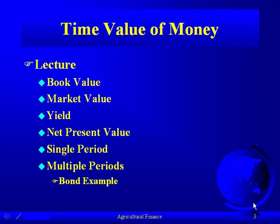Today's lecture, we're going to talk about book value, market value, yield, and net present value. We're going to introduce these terms in a single period model. The single period framework is very simple and the mathematics is easy; when you get into the multi-period framework, it gets more complicated. So at the risk of boring you a little in the single period, we'll do that so we can step into the multi-period world, which is the more common. We'll use a bond example to explain these concepts in a multi-period framework.